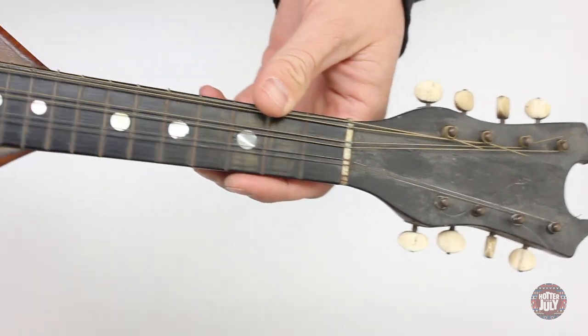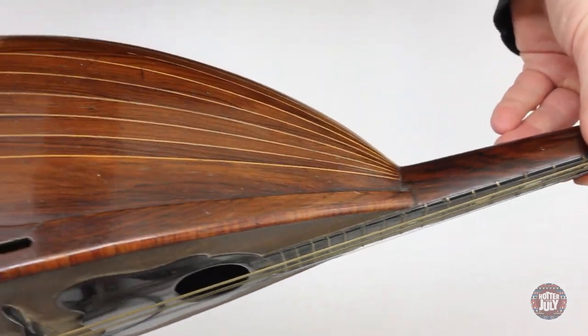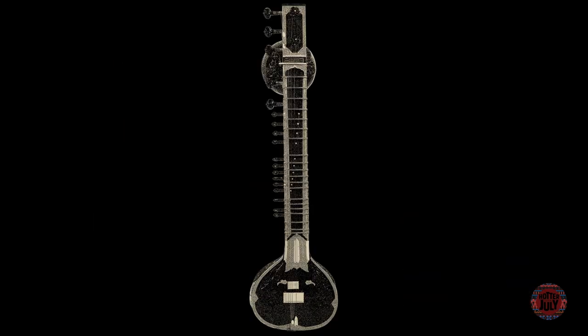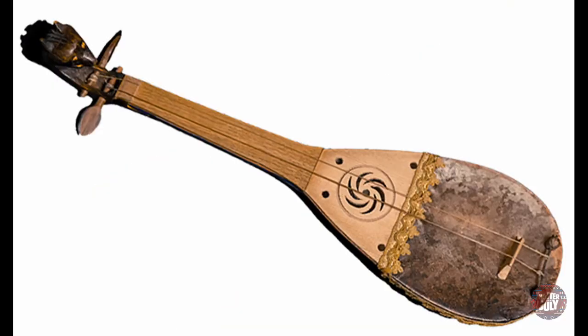Lutes are a family of instruments with a separate neck attached to a body. Examples of lutes from around the world include the violin family, guitar, sitar, bouzouki, rebab and ombra.